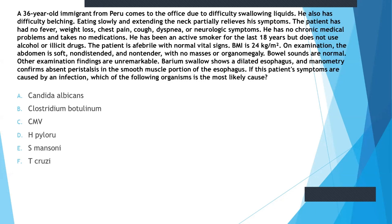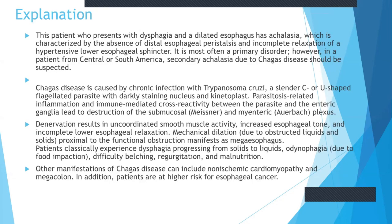This indicates achalasia of the esophagus. The causative organism for achalasia is Trypanosoma cruzi. So this patient with dysphagia and a dilated esophagus has achalasia, which is characterized by the absence of distal esophageal peristalsis and incomplete relaxation of a hypertensive lower esophageal sphincter. It is most often a primary disorder. However, in a patient from Central or South America, secondary achalasia due to Chagas disease should be suspected.